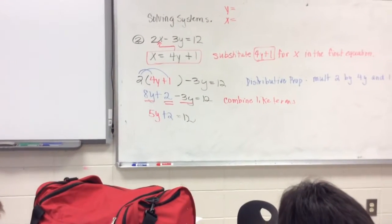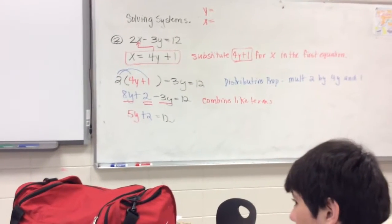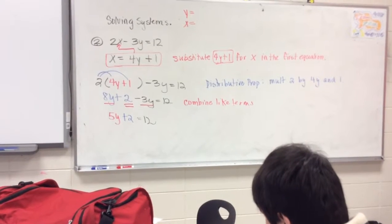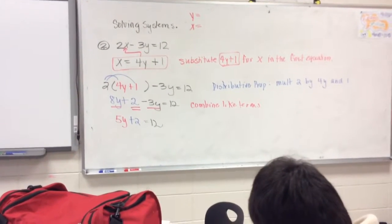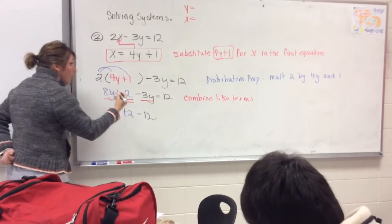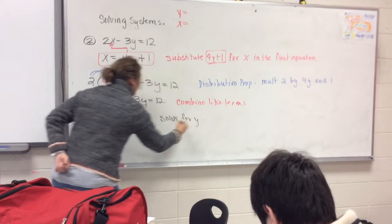Now, from here, what do you have to do? What kind of equation do you have now? Two-step equation. And in order to solve it, what? You have to get y by itself. So we have to solve for y. So we're solving for y.